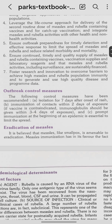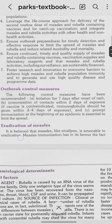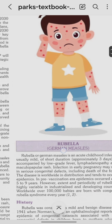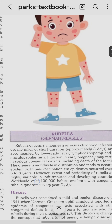Outbreak control measures include isolation within seven days after the onset of rash and immunization of contacts within two days of exposure. If vaccine is contraindicated, immunoglobulin should be given within three to four days of exposure. Prompt immunization at the beginning of an epidemic is essential to limit spread. Measles is amenable to eradication, similar to smallpox, with only two doses of vaccine needed.